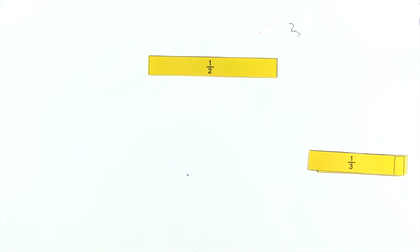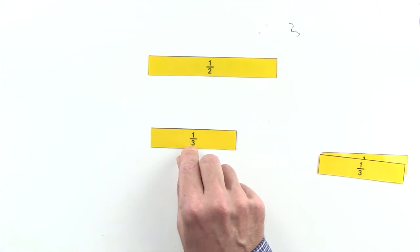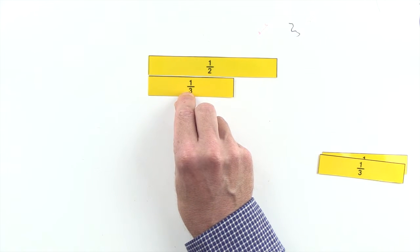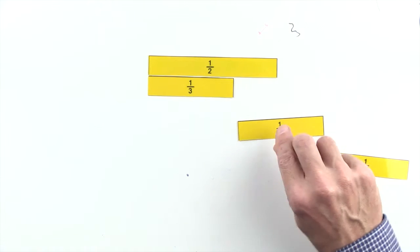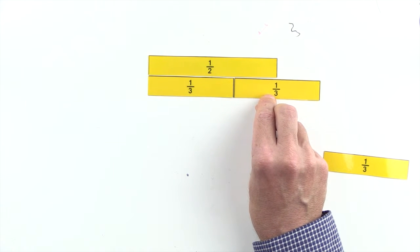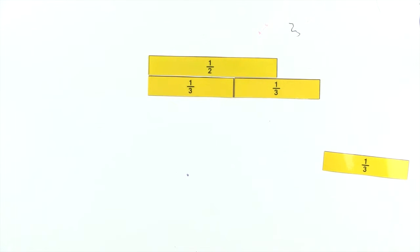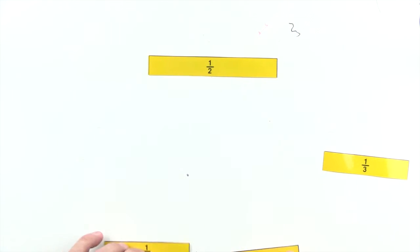Let's start by comparing thirds to one half. One third is less than one half, and two thirds are greater than one half. So we can't use thirds to make an equivalent fraction to one half.